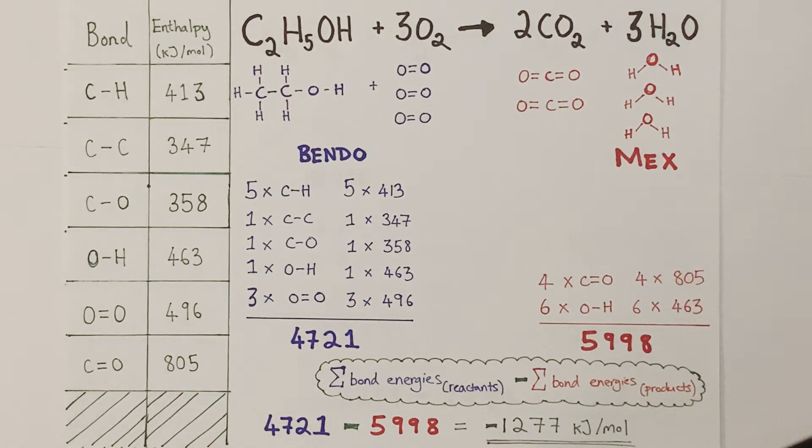So the key thing with these mean or bond energy calculations is to keep a nice, neat list of the bonds involved for the reactants and products, do the subtotals of those two processes, and then take away the product value from the reactant value and you'll always get the right answer.